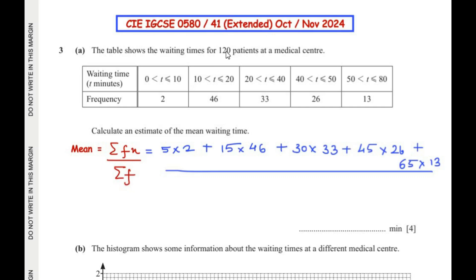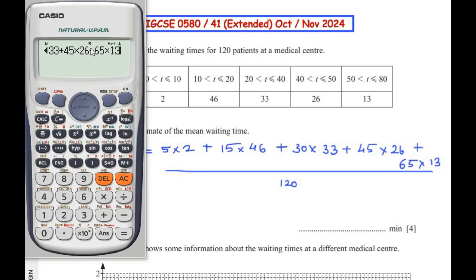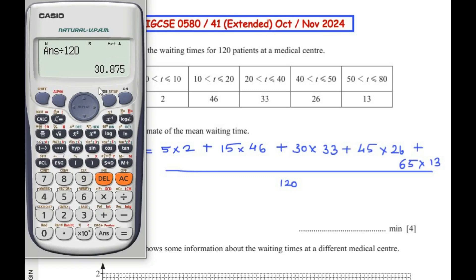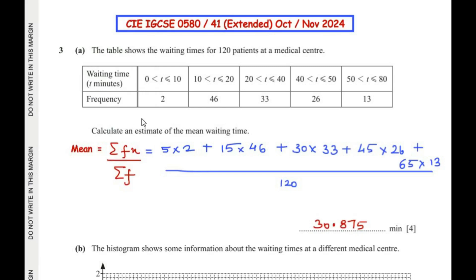Computing the numerator gives us our total sum, and dividing by 120 gives us a mean of 30.875. So 30.875 minutes is the estimate of the mean waiting time.